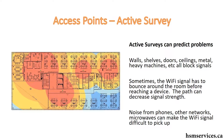The reason an active survey is so important is that walls, machines, and many other metal objects block the signal. The manufacturer of the AP might say you can get 300 feet of coverage, but you don't actually know what coverage you're going to get until you perform a survey. Not only is there metal in the ceiling, but sometimes a Wi-Fi signal bounces off a wall before it gets to you — it doesn't necessarily travel in a straight line — and that decreases the signal strength. Plus, we've also got noise from other devices in the building.